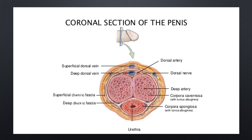The corpora cavernosa consists of two masses of erectile tissue forming the bulk of the penis. In males it forms the bulk of the penis, and in females the equivalent structure forms the clitoris.